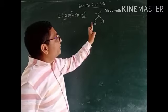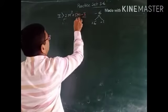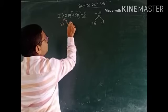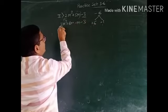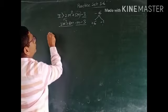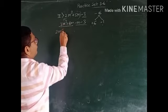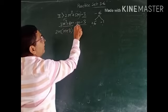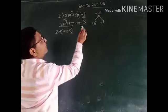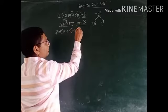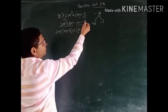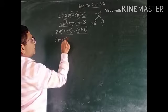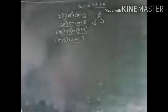The positive sign goes to the greater number, and the remaining number will be negative. Now we split the middle term: 2m² + 6m - m - 3. Grouping these four terms into two: in the first group, 2m is common, leaving (m + 3) in the bracket — 2m divides 2m² to get m, and 2m divides 6m to get 3. In the second group, -1 is common. Dividing -m by -1 gives m, and -3 by -1 gives +3. Again, (m + 3) is the common bracket, so the factors are (m + 3)(2m - 1). These are the factors of this polynomial.